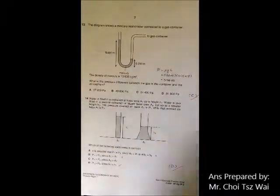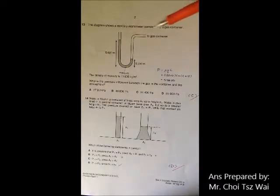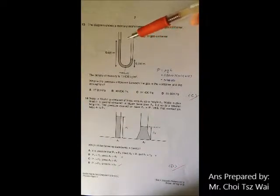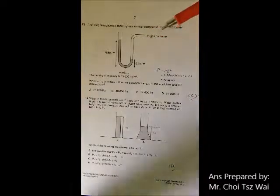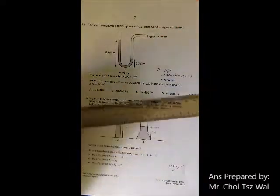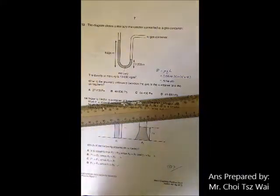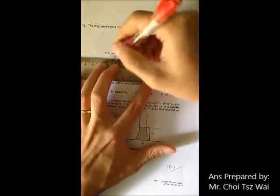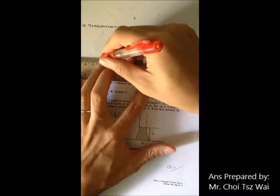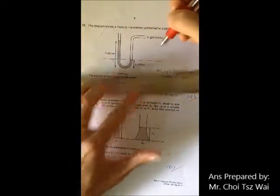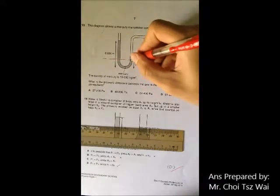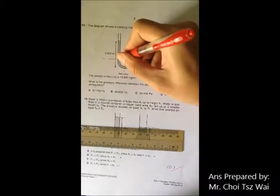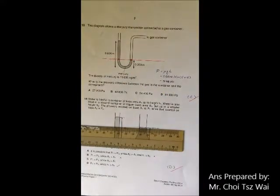Okay, question 13. Manometer, you are asked to calculate the pressure in the gas container. So the concept behind this question is that the water level, so you can actually draw any line here. Any convenient line, it will work. So if you choose a line here, it means that the pressure at this point and the pressure at this point must be the same.